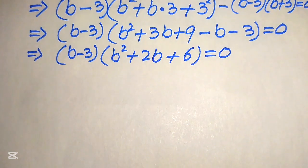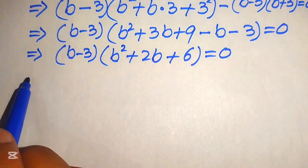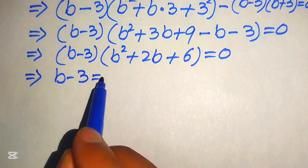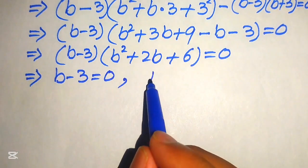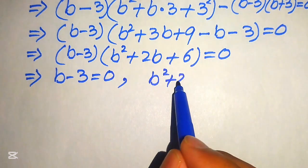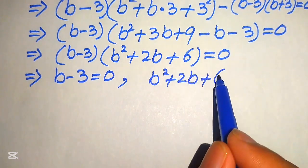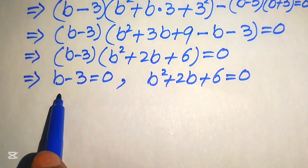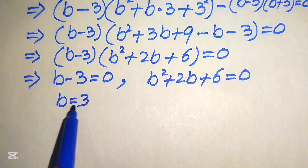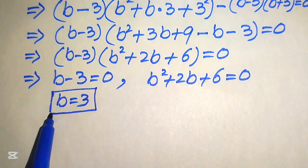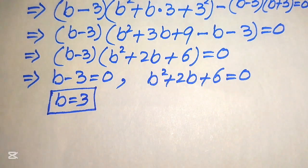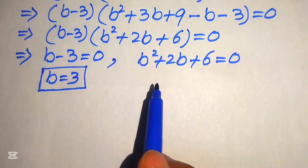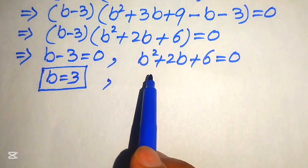We split the equation into two cases. The first case gives b minus 3 equals 0, so b equals 3 — this is the first real root. The second case is the quadratic equation b squared plus 2b plus 6 equals 0, whose roots we now find.